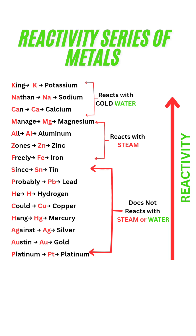Let's go again: King Nathan can manage all zones freely since. Probably he could hang against Austin platinum.